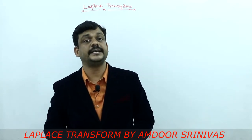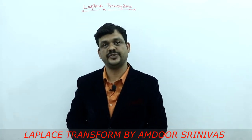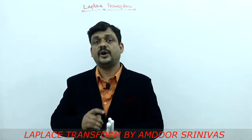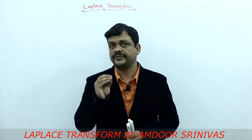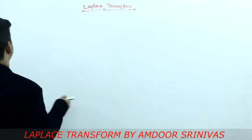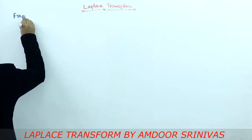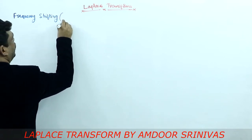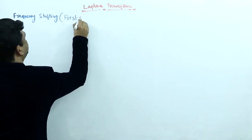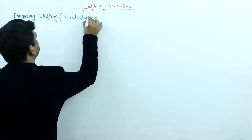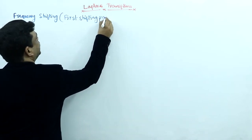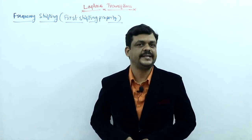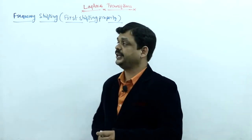From the shifting property, another property is the first shifting property, also called the frequency shifting property. We have to apply the shifting operation in the frequency domain. Just as we discussed the shifting operation in the time domain, similarly we apply shifting in the frequency domain. In mathematics, this is called the first shifting property, and for signals analysis it is called the frequency shifting property.